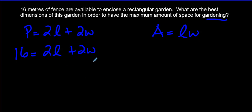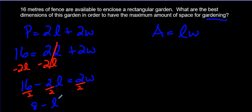We want the most space for gardening. So what's the maximum area? Well, we know the area formula for a rectangular shape is length times width. I'm going to get W all by itself. How do you get W all by itself? Well, start by getting rid of the 2L. Minus 2L from both sides. We get 16 minus 2L is 2W. Divide everything by 2. You end up getting 16 divided by 2 is 8. W is equal to 8 minus L.